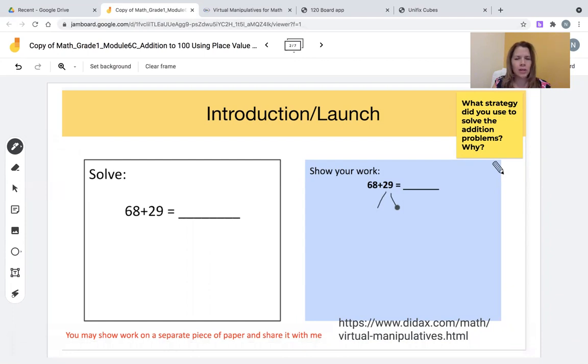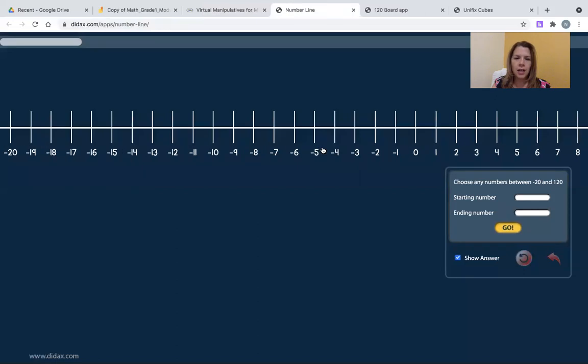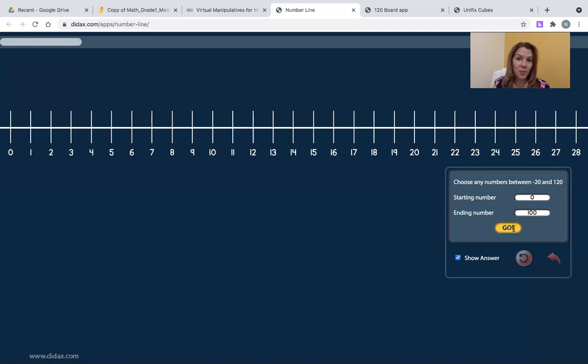I really also would like to make the next ten. So because I like to make the next ten, and I have 68, I know that I can add two more. So I'm going to break apart 29 into the two more to make 70 and 27. I'm going to use a virtual manipulative. So I'm going to click on the link. And what I've selected today is a number line. I'll click on the number line, and I'm going to start at zero to 100 and click go.